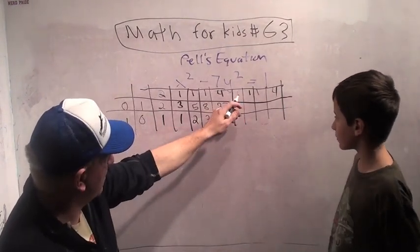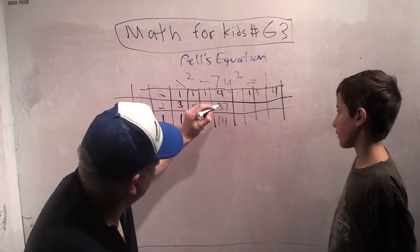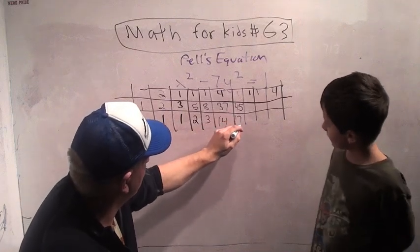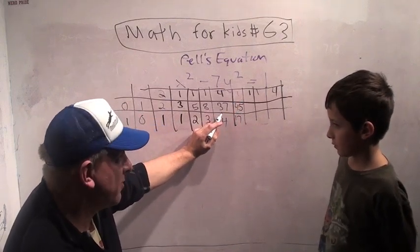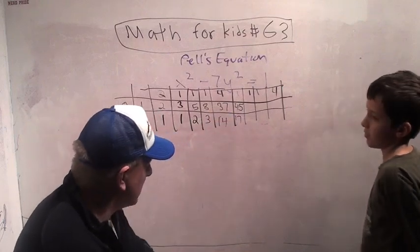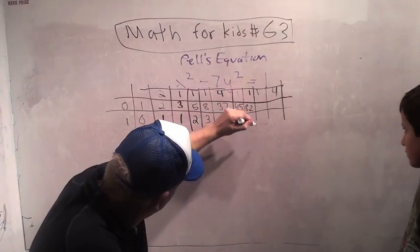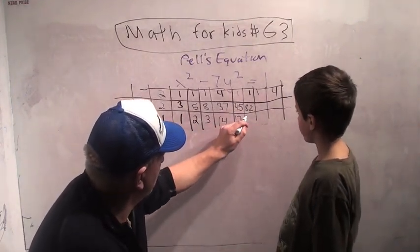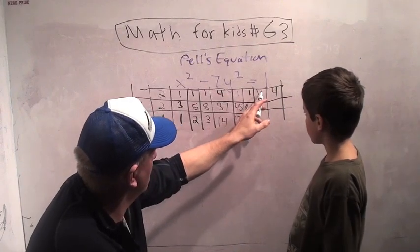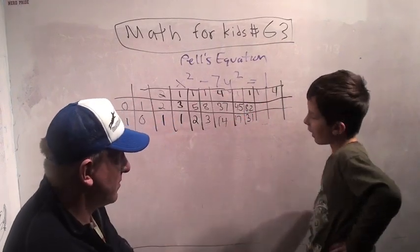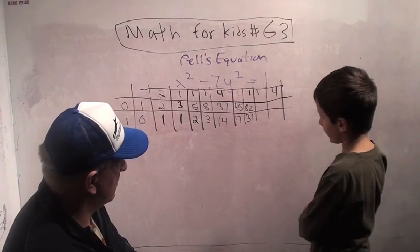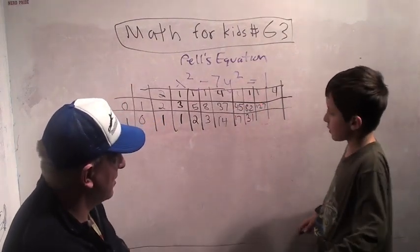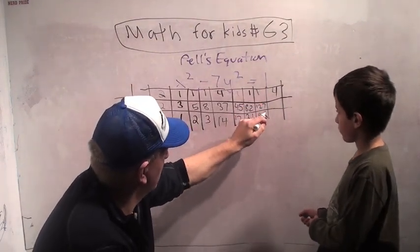4 times 8 plus 5 is 37. 4 times 3 plus 2 is 14. Not Fibonacci anymore. And there goes the Fibonacci numbers. So no longer Fibonacci. But I want to keep going for just a little bit. 1 times 37 plus 8 is 45. 1 times 14 plus 3 is 17. 1 times 45 plus 37 is 82. 1 times 17 plus 14 is 31. And 1 times 82 plus 45 is 127. And then 1 times 31 plus 17 is 48.